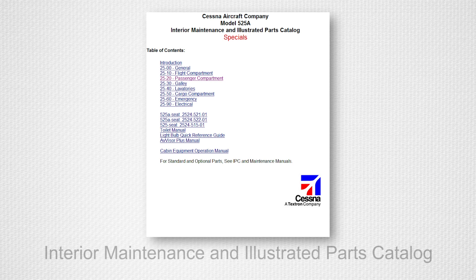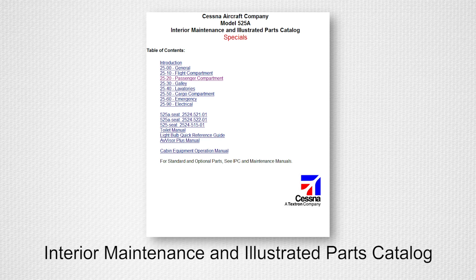Instead, it can be found in the aircraft serial-specific Interior Maintenance and Illustrated Parts Catalog. This manual can be either a paper copy or a CD which was delivered with the aircraft from the factory. The information in this manual applies specifically to that aircraft's serial. The composite step assembly on the Model 525 is more common, and part information for it can be found in both the 525 Illustrated Parts Catalog as well as the Interior Manual.